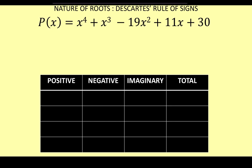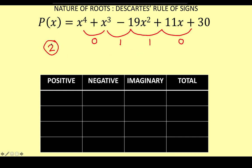Let me demonstrate Descartes' rule of signs using our problem. Let's count the number of sign changes in our given polynomial. From positive x⁴ to positive x³, there is no sign change. From positive to negative, there is one sign change. From negative to positive, there is another sign change. From positive to positive, there is no sign change. So we have a total of two sign changes. According to Descartes' rule of signs, we can expect two positive roots or less than this number by an even integer.